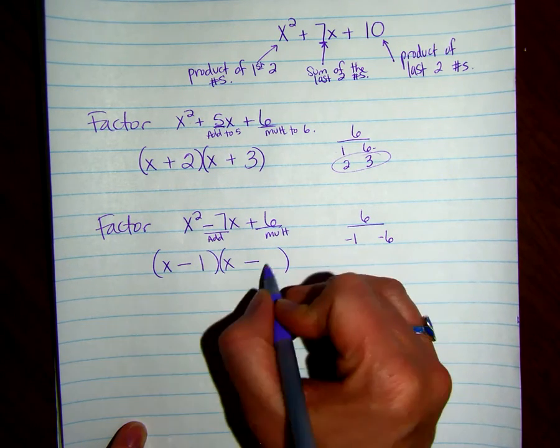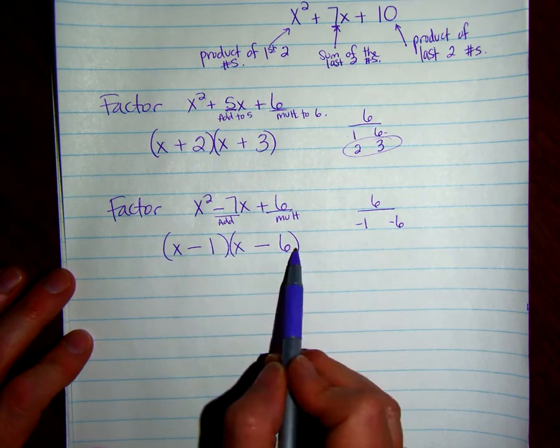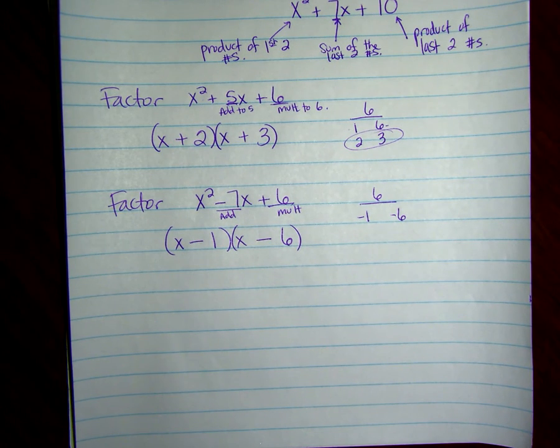So negative 1 and 6. So I put my negative here, negative 6. So the last ones will multiply to positive 6, and then we could add them to get negative 7x. And that's the end of the lesson.